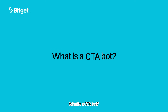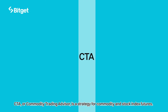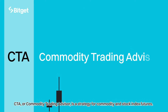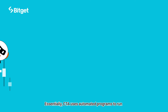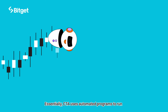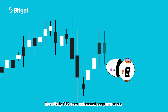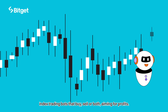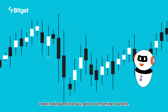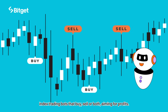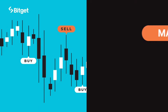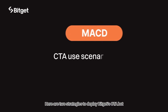What is a CTA bot? CTA, or Commodity Trading Advisor, is a strategy for commodity and stock index futures. CTA uses automated programs to run index trading bots that buy, sell, or both, aiming for profits.